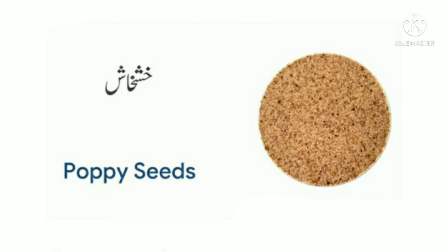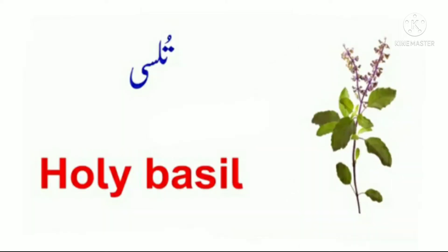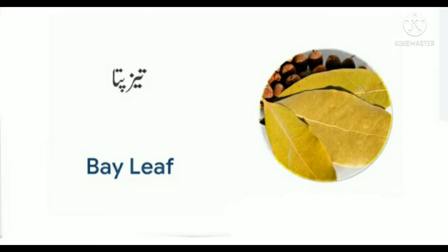Number thirty: star anise, badian. Number thirty one: holy basil, tulsi. Number thirty two: curry leaves, curry patta. Number thirty three: bay leaf, tez patta.